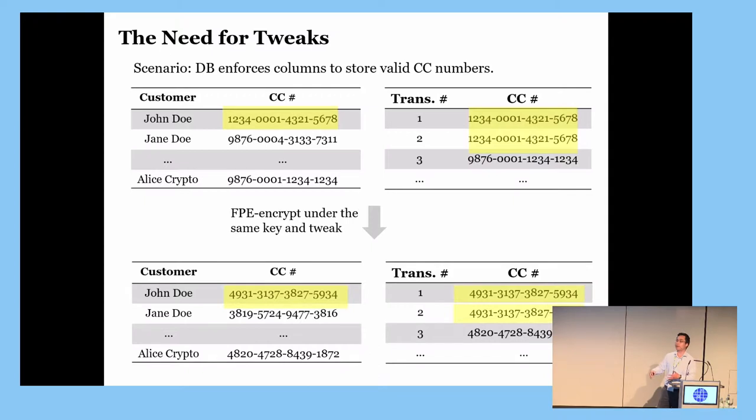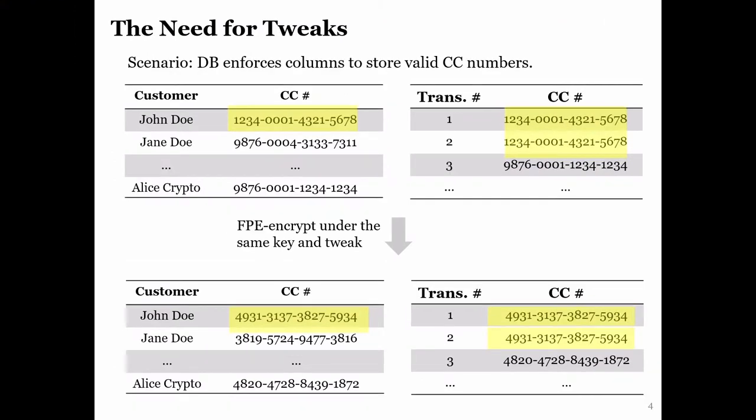Now, suppose we encrypt the credit card numbers by FPE under the same key and tweak. Because FPE is deterministic, encrypting the same message twice under the same key and tweak would result in the same ciphertext. Therefore, if you combine the two encrypted tables, you can still realize that John Doe made the first and second transactions as before.